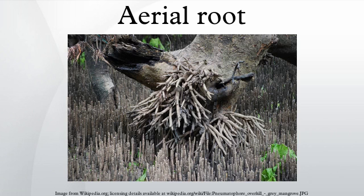Aerial roots are roots above the ground. They are almost always adventitious. They are found in diverse plant species, including epiphytes such as orchids, tropical coastal swamp trees such as mangroves, the resourceful banyan trees, and the warm temperate rainforest Rata and Pohutukawa trees of New Zealand, and vines like common ivy and poison ivy.